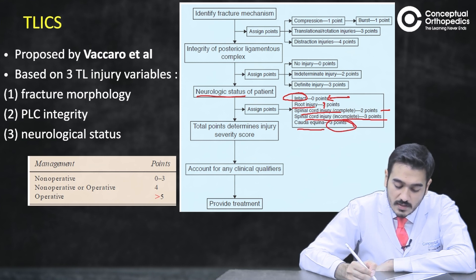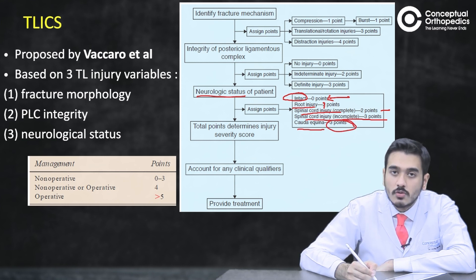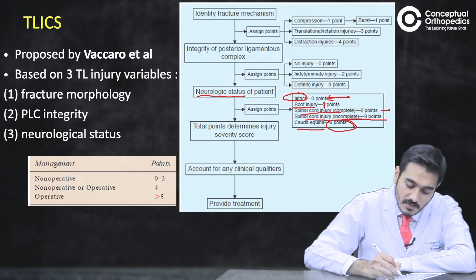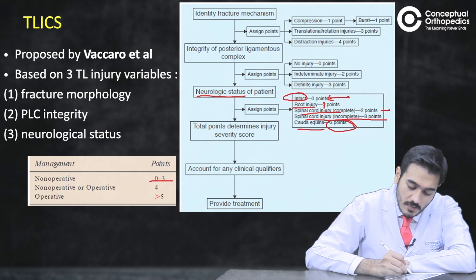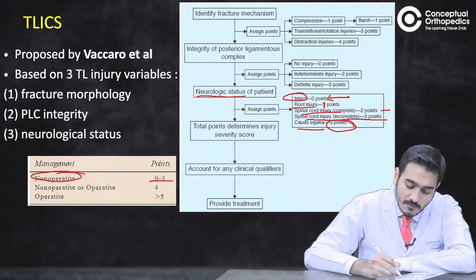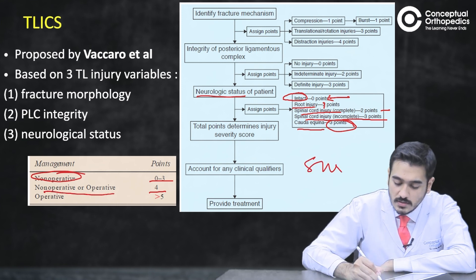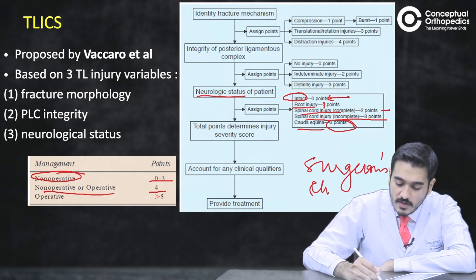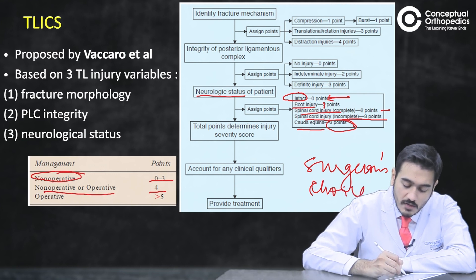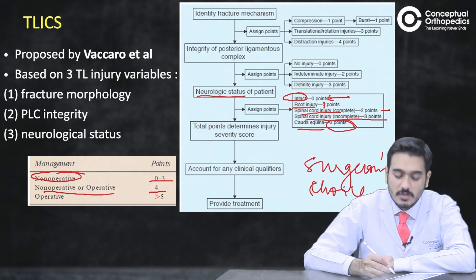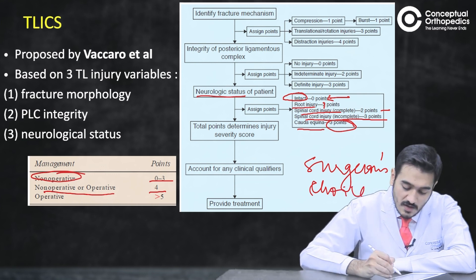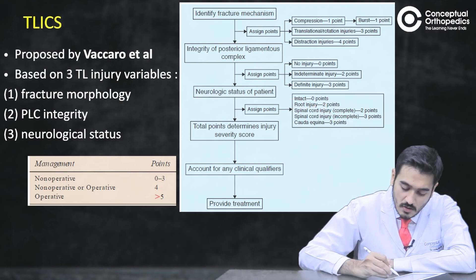Calculate all the points to determine the total score. If the score is 0–3, manage conservatively. If the score is 4, it is surgeon's choice — either non-operative or operative management. If the score is more than 5, it is an indicator for surgery.